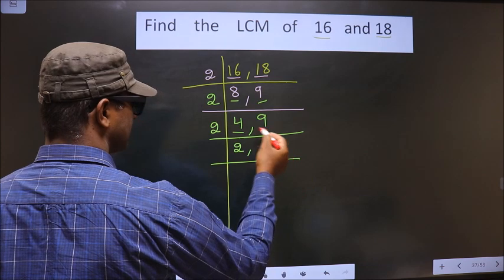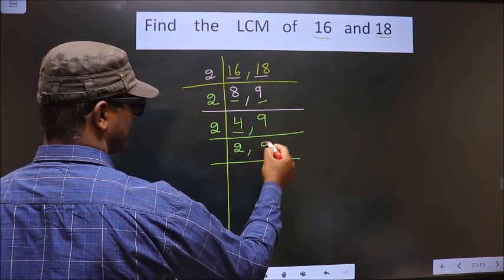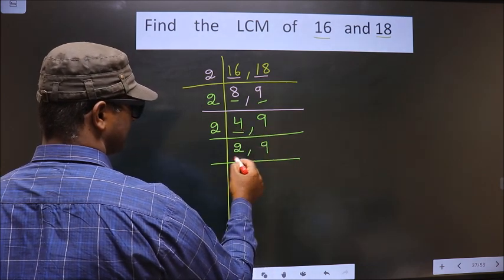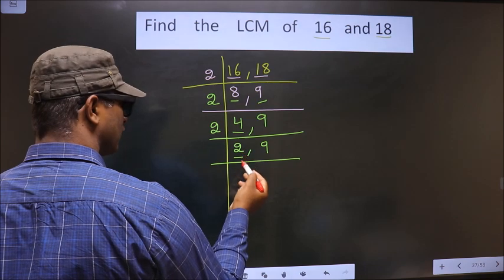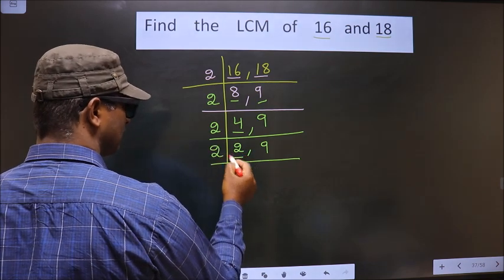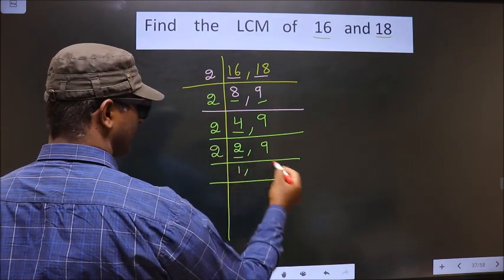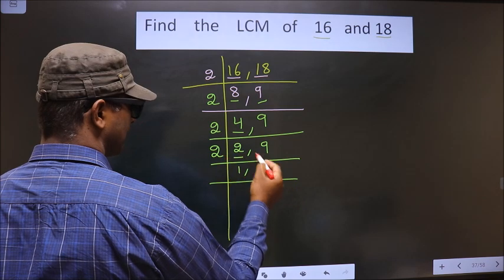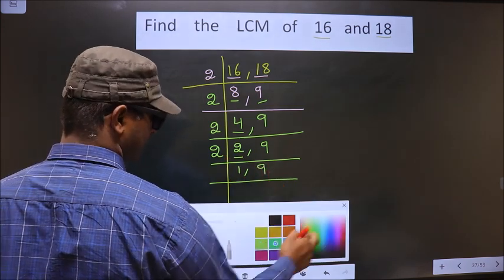9 is not divisible by 2, so you write down as it is. Here we have 2. 2 is a prime number, so I take 2 ones, 2. 9 is not divisible by 2, so you write down as it is.